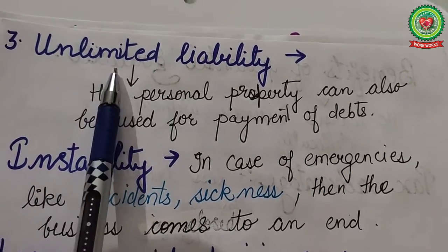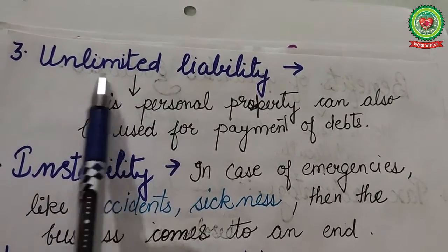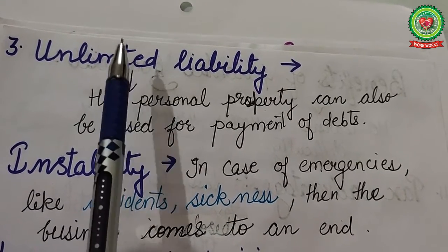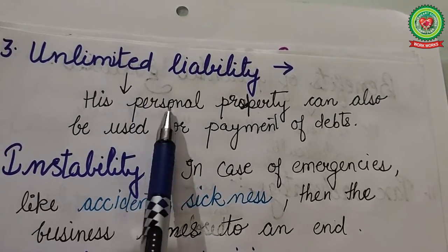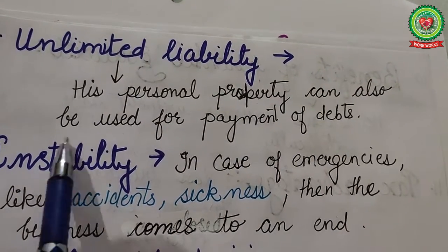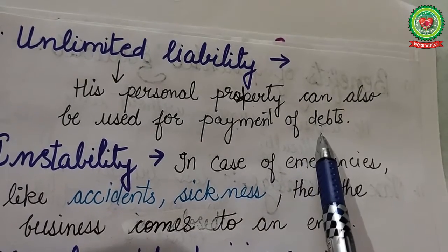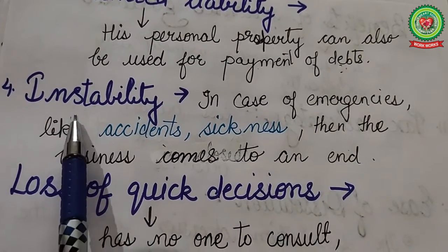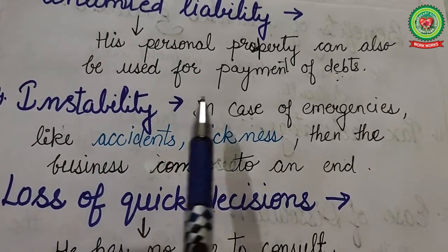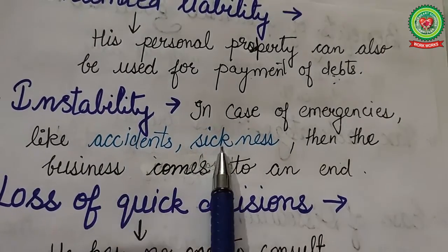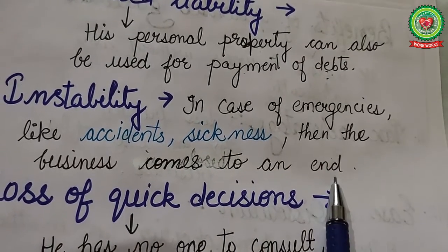Next is unlimited liability — the liability of the sole trader is unlimited, so in case of high losses where the business assets are insufficient to pay the debts, his personal property can also be used for payment of losses or debts. Next is instability — this type of business organization lacks stability because in case of emergencies like accidents, sickness, or the death of the owner, the business comes to an end.